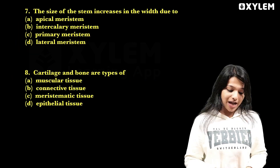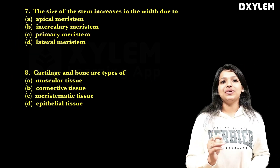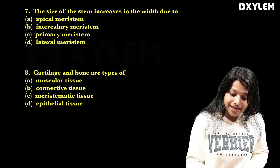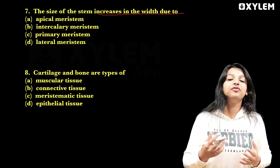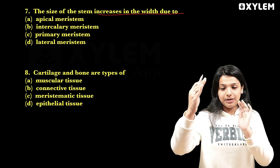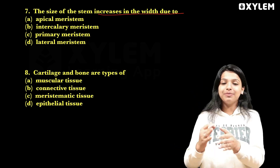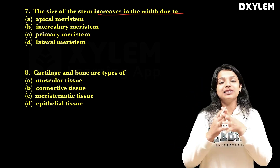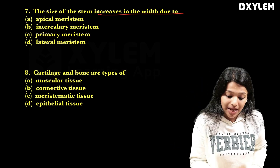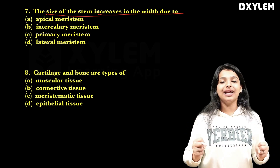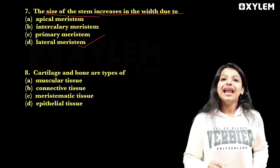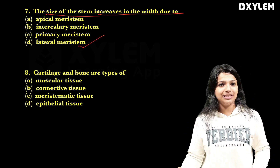Seventh question: the size of the stem increases in width. We have apical, intercalary, and lateral meristem. Then the stem increasing in width of the stem — that is our lateral meristem.